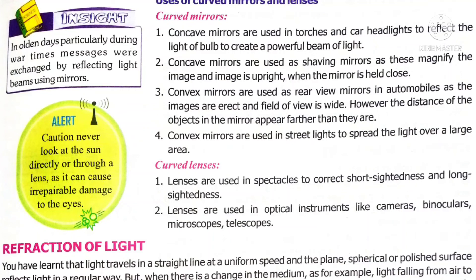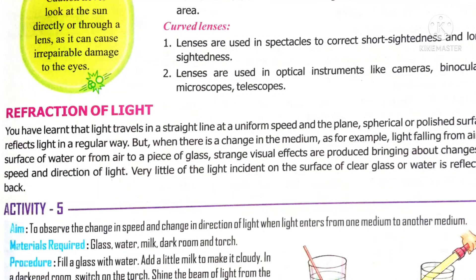Look at this image. When you put a pencil inside water, the image of the pencil inside the water appears bent. This phenomenon is called refraction. What is refraction? When light passes from one medium to another — for example, from air to water — it changes speed. The speed of light changes from one medium to another, which in turn causes a change in the direction of the light. This is called refraction.